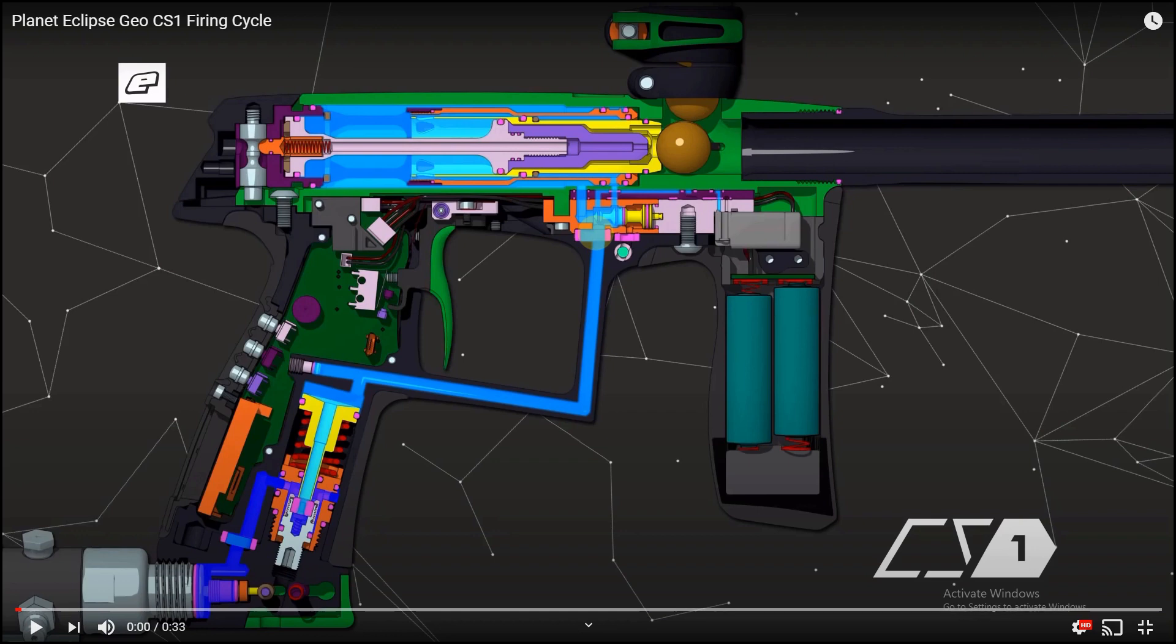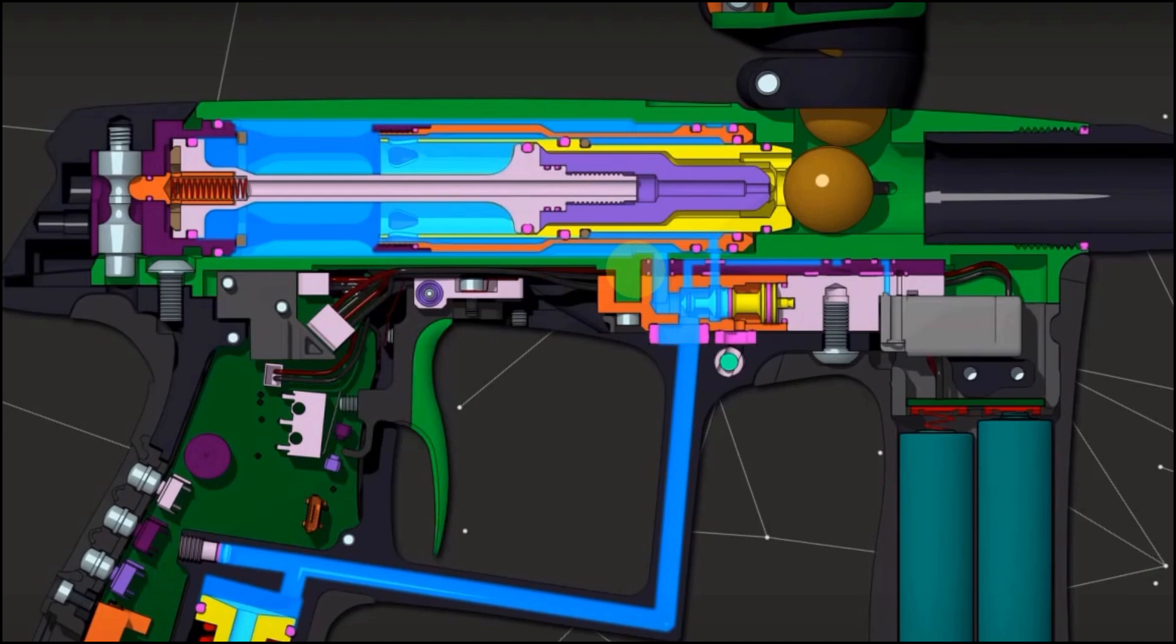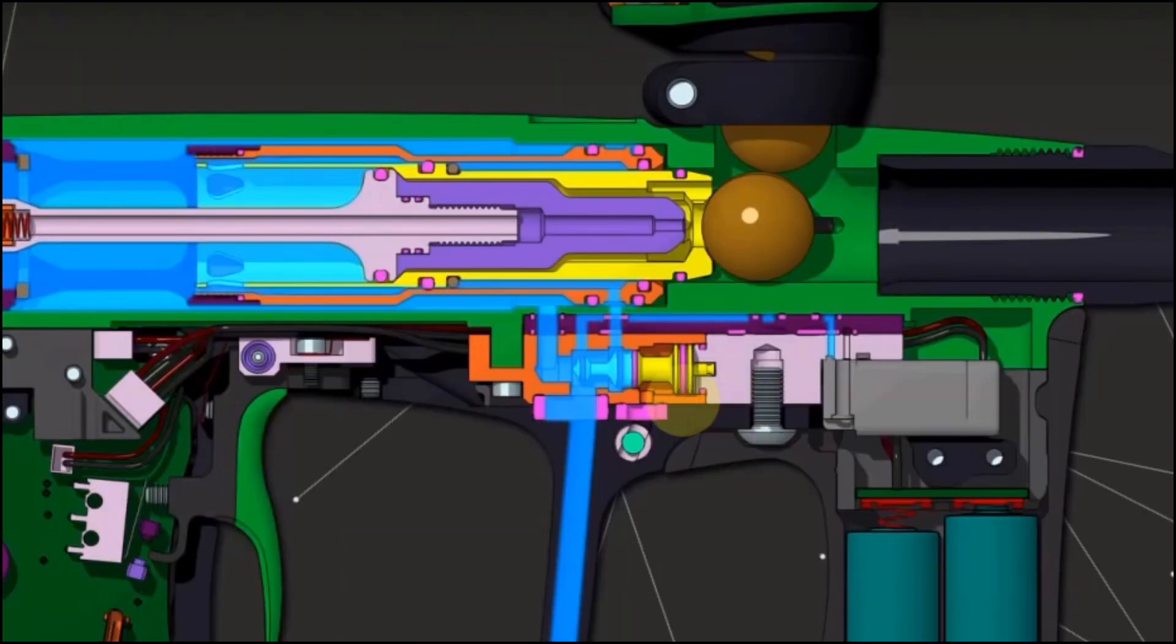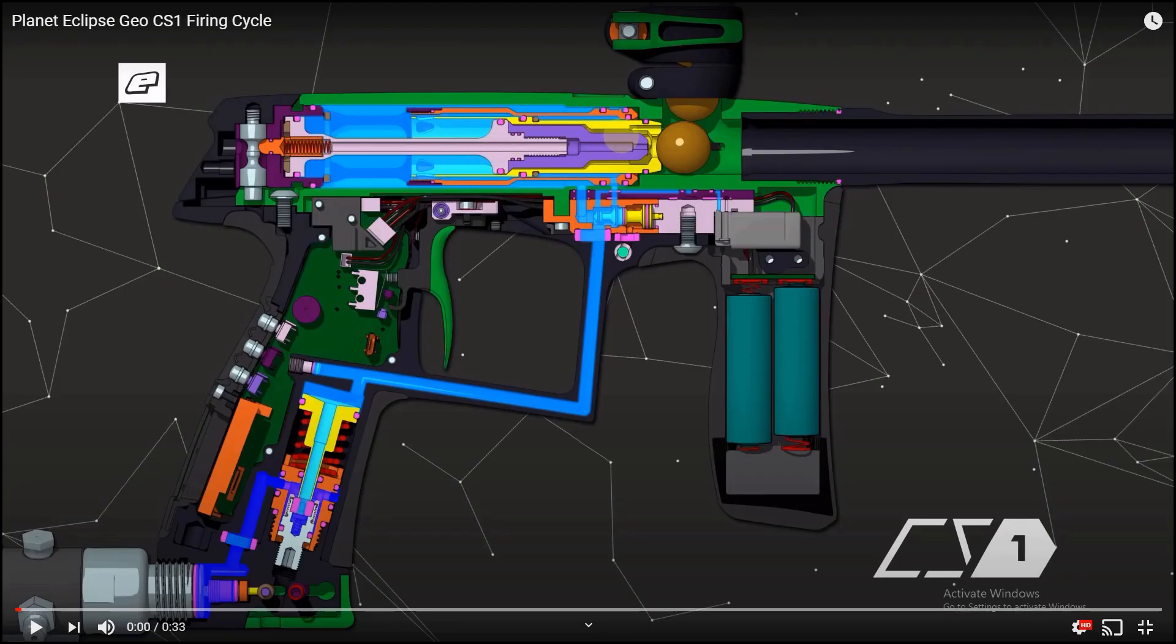Here we have the air being routed to the MAC valve or pilot valve, and lastly we have the air that is holding back the bolt into its rear position. We'll call this the air sear. Note that the reactive valve or the prop shaft is in its rearward position.